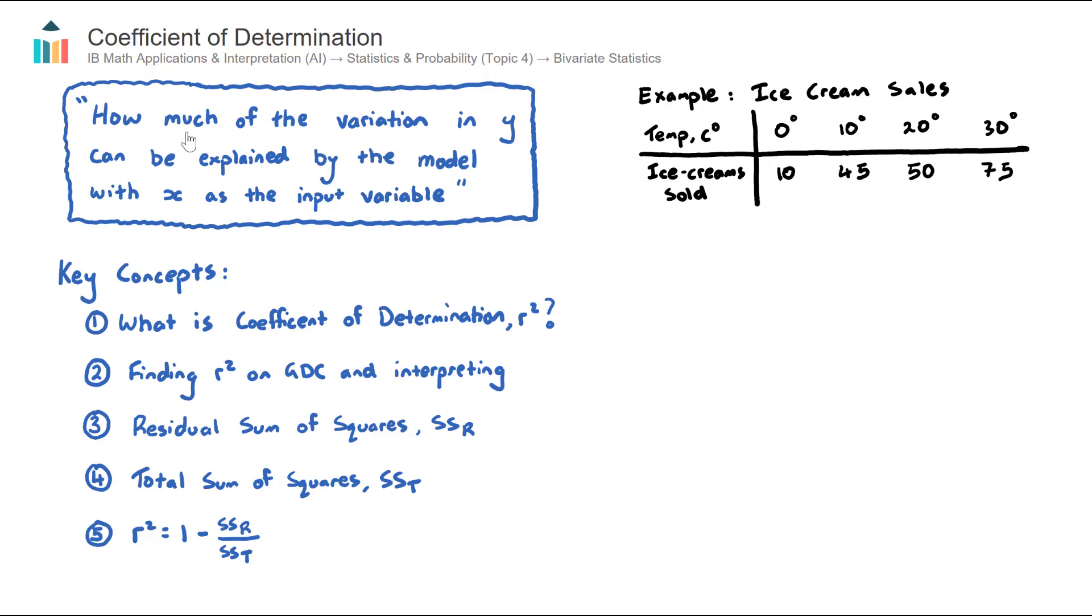The R-squared value represents how much of the variation in the Y variable, or the dependent variable, can be explained by the model with X as the input variable.